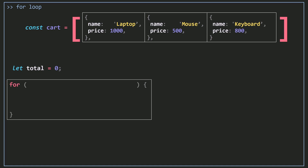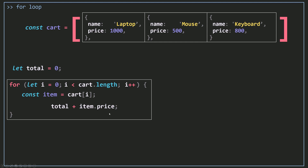I'm going to use a for loop, starting from the first element at index zero and stopping at the last one, incrementing i by one each time. I'll create a const called item equal to cart at index i to make the code more readable, then add total plus item.price and assign that back to total to accumulate the price of the items.